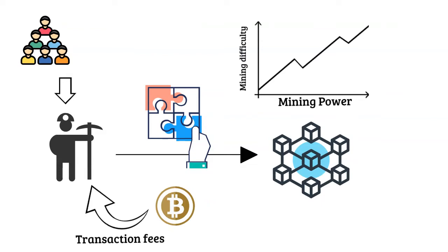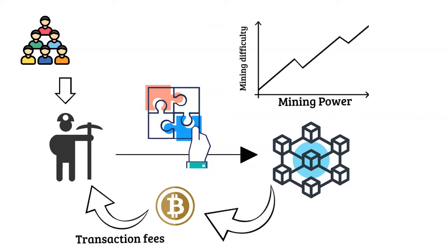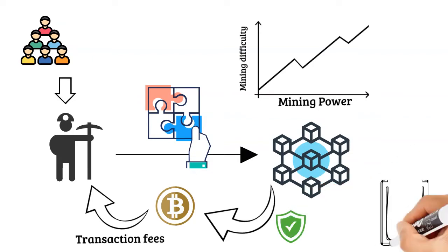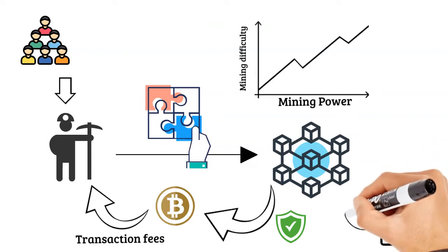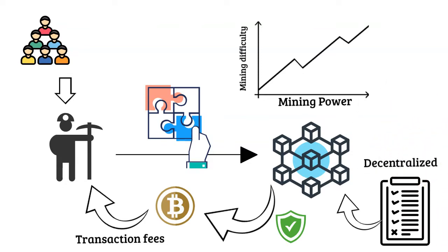Additionally, you get paid any transaction fees that were attached to the transactions you inserted into the block. So that's bitcoin mining. It's called mining because this process helps mine new bitcoin from the system. But if you think about it, the mining part is a byproduct of the transaction verification process, so the name is a bit misleading, since the main goal of mining is to maintain the ledger in a decentralized manner.